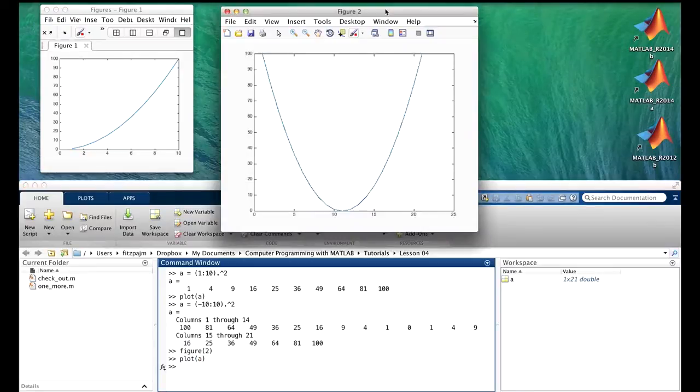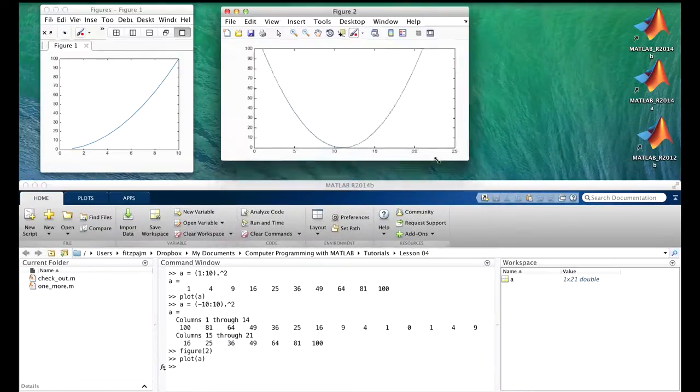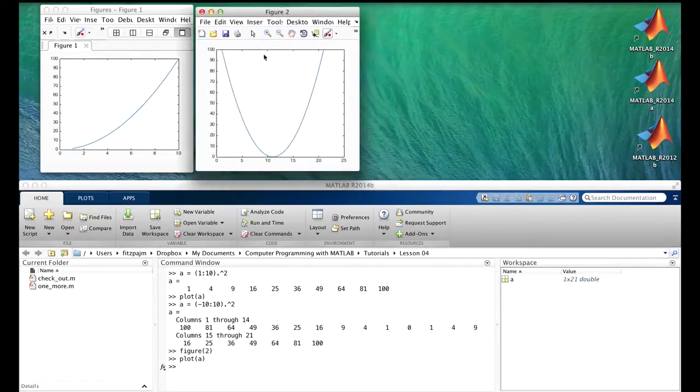I can type figure and I'll get a figure two, or I can actually tell it I want figure two. Either way, there's a new figure, and I can plot into it. Let's make this one about the same size as the other one. Note you can just change the aspect ratio too. Let's tuck them over here right side by side. So now we can see the whole parabola there. And you'll notice that MATLAB picks a range, picked 0 to 10 here to get all the points, picked 0 to 25 here.